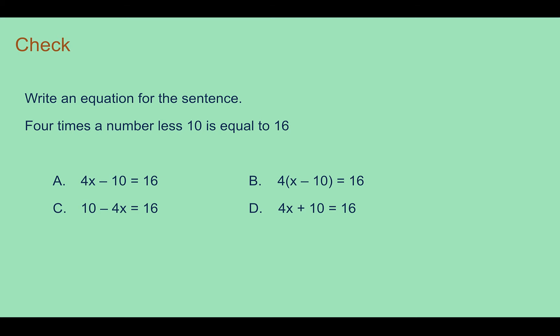Check your answer. For this one, 4 times, so we're looking for 4 and then multiplication. A number less 10. So if you had a number and you took away 10, it's 4 times that.